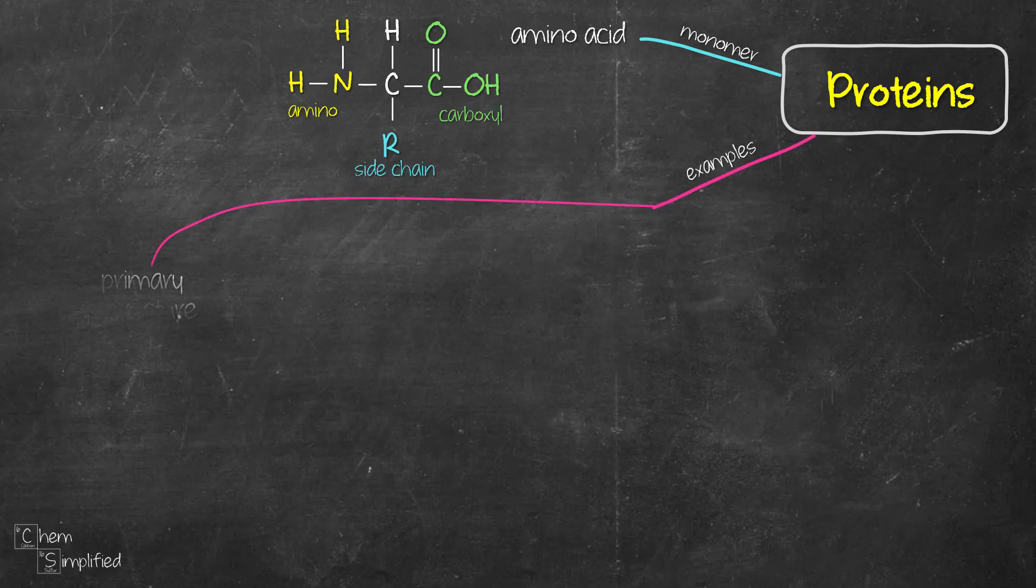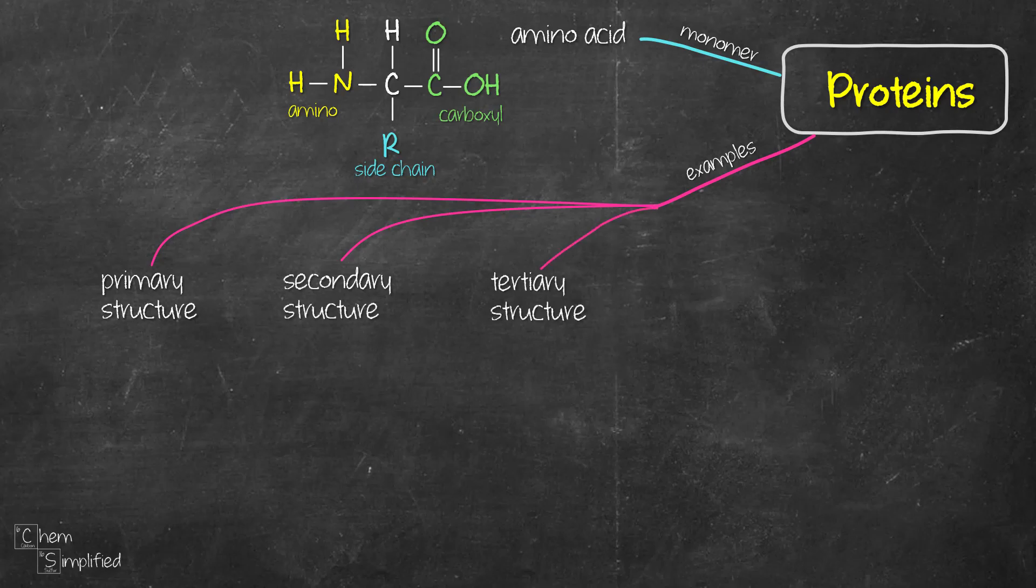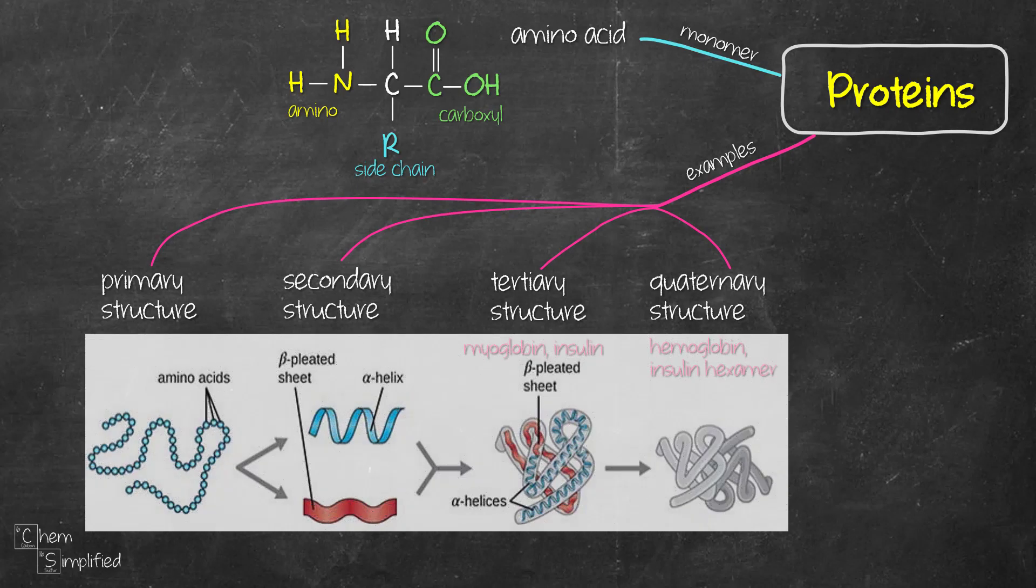Proteins are classified as primary structure, secondary, tertiary, and quaternary. In a primary structure, all the amino acids are linked together through a peptide bond which is basically an amide bond. They form a long polypeptide chain. So that essentially is the primary structure.